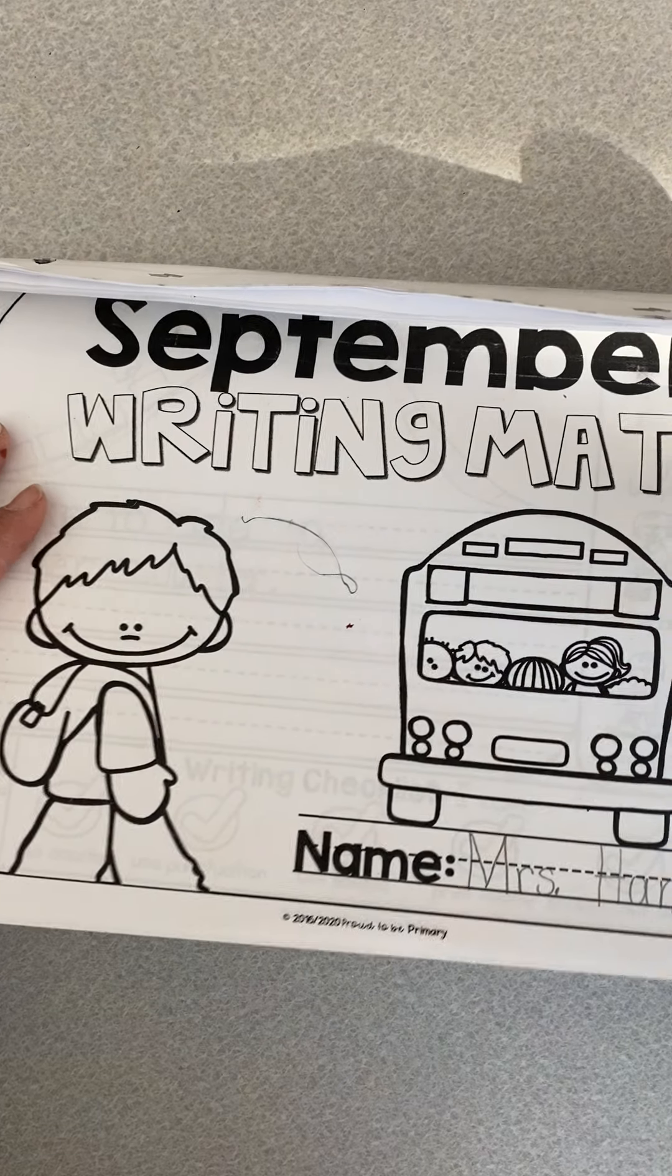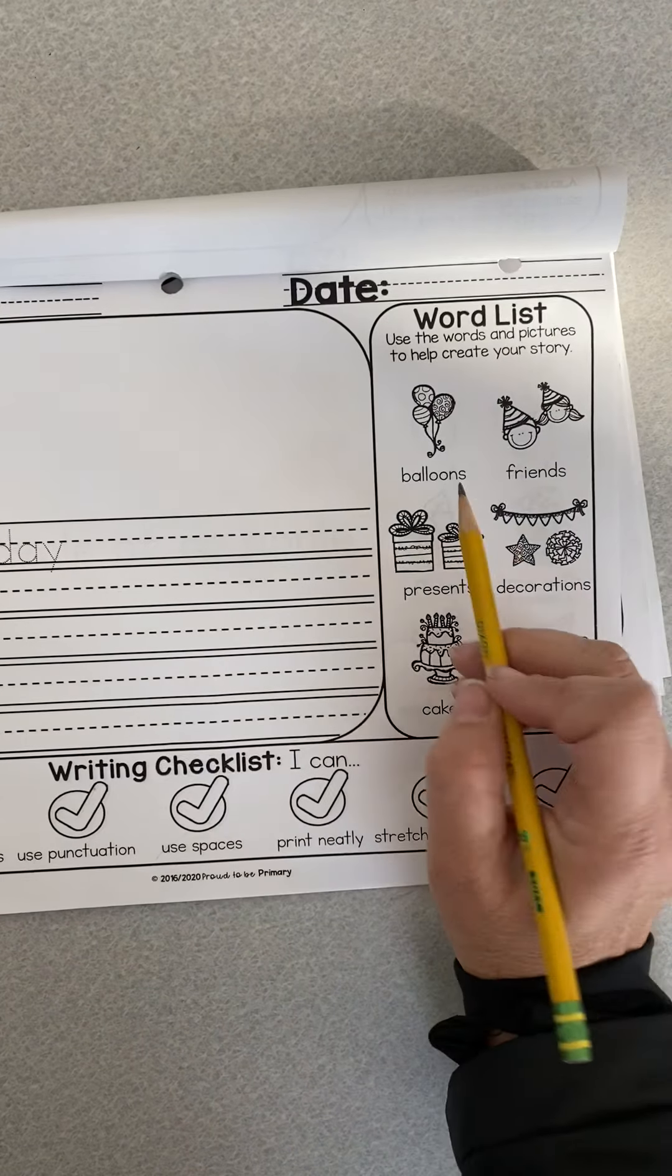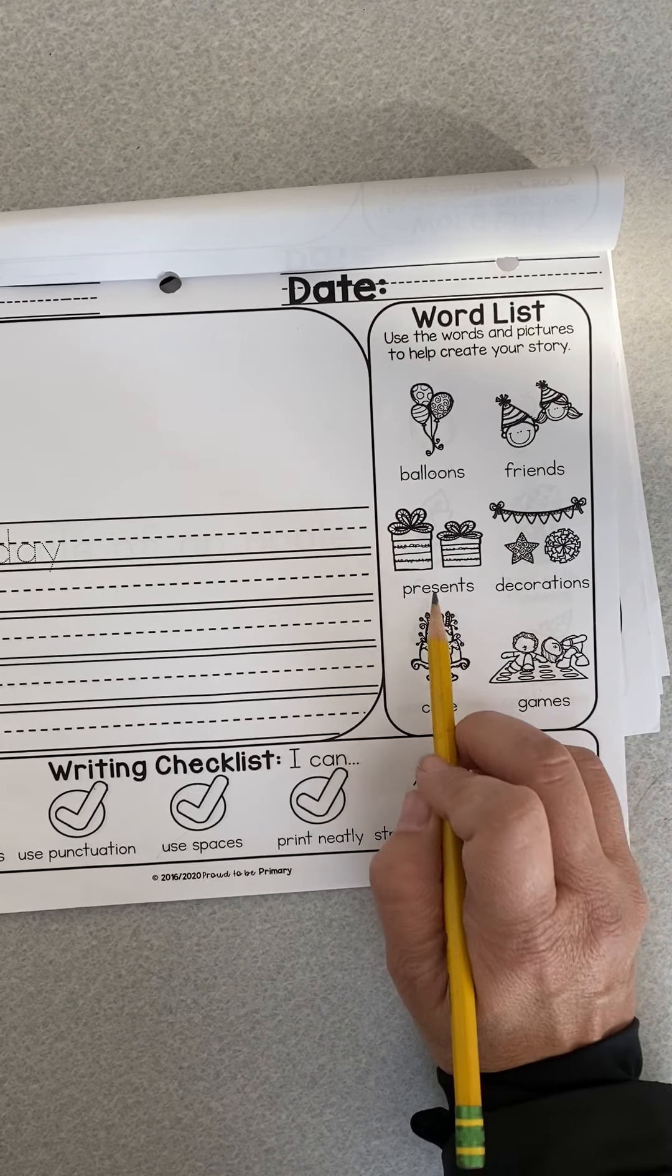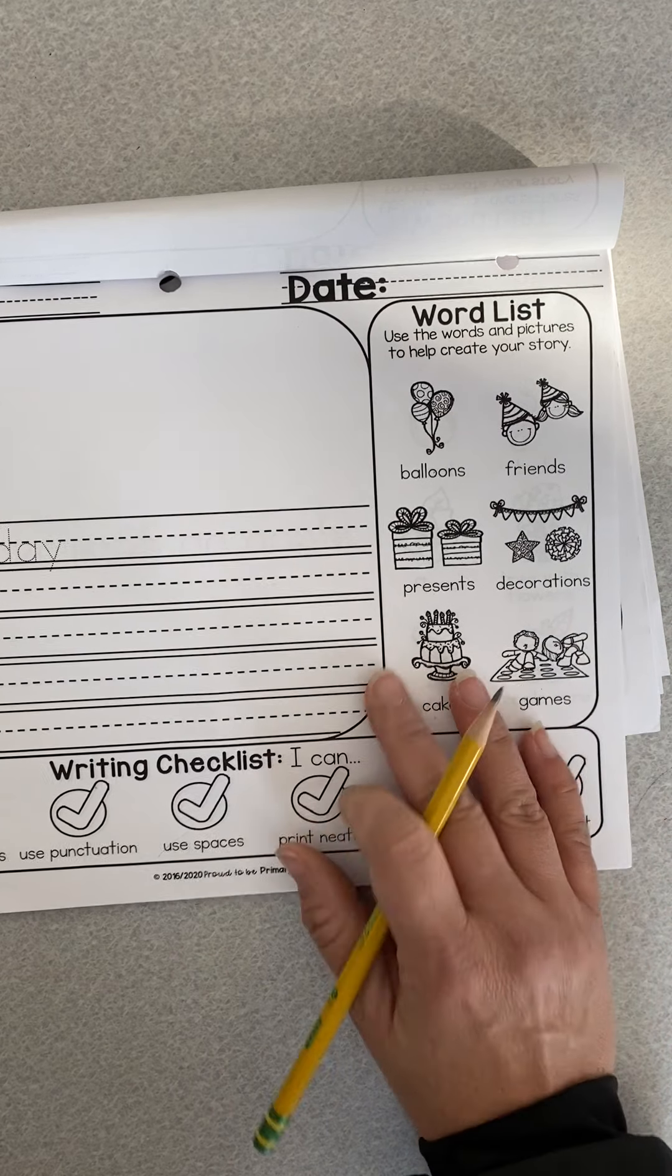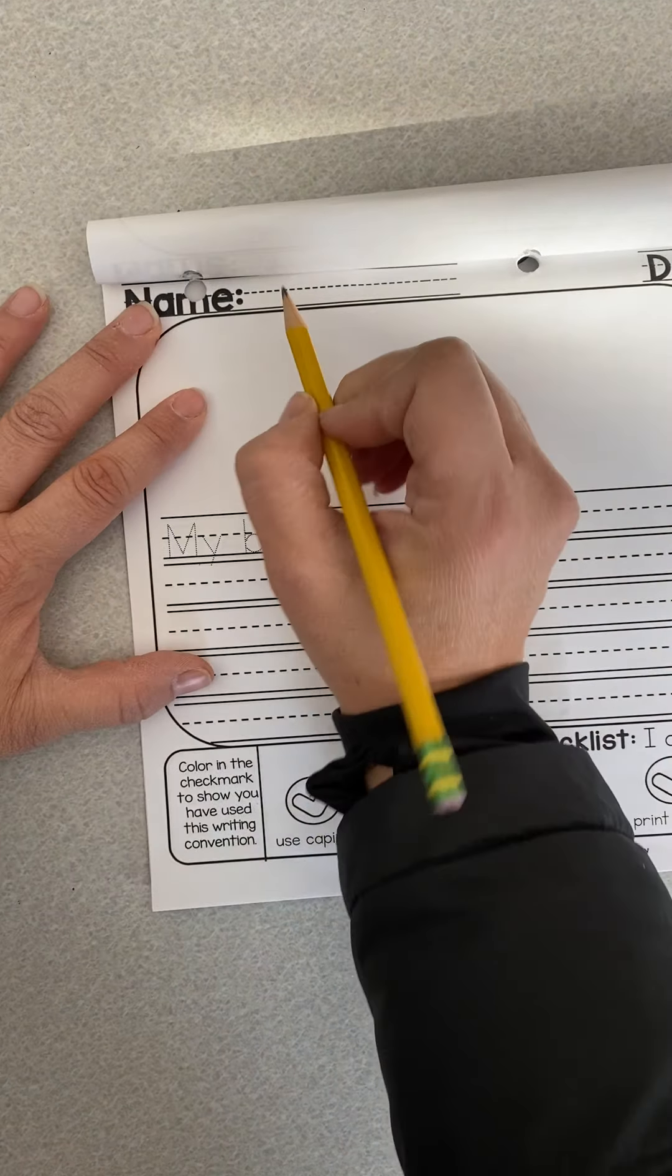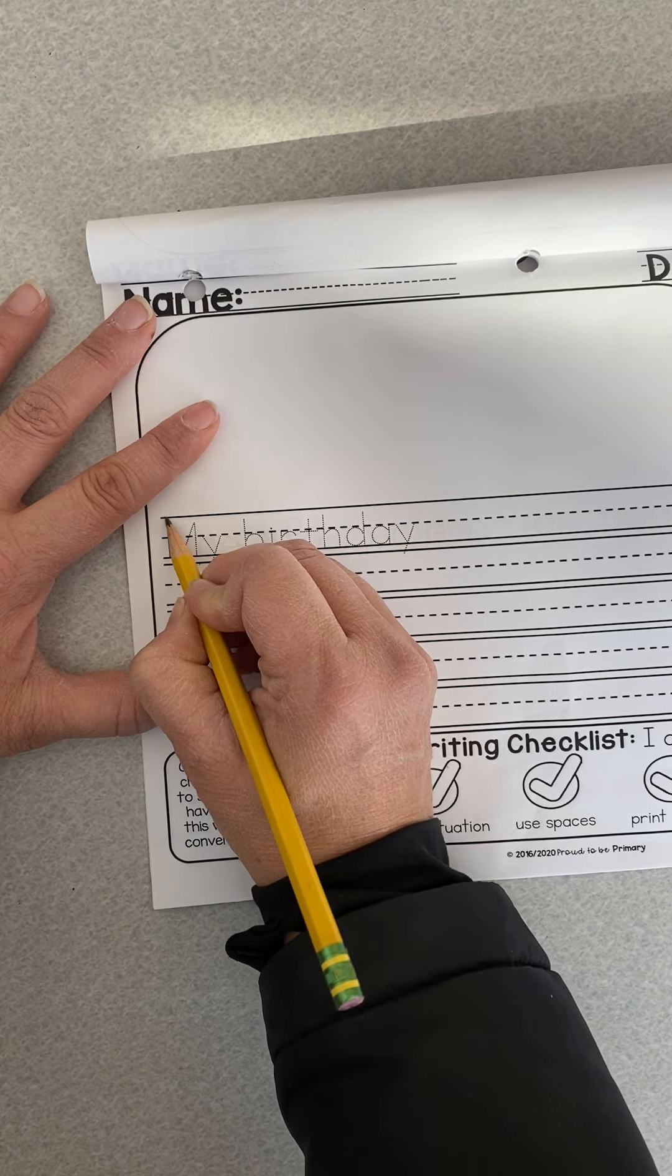Then you're going to get to your writing mat. Remember, this is your writing mat. You're going to turn to the next page. The next page says My birthday, and it has balloons, friends, presents, decorations, game, and cake. And of course, you're going to write your name at the top first. Then you're going to trace the words My birthday.